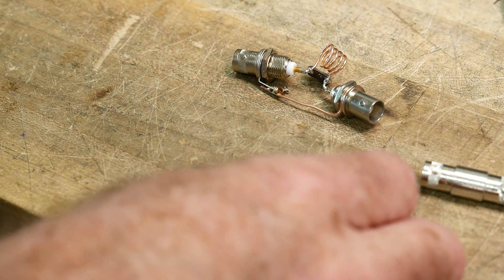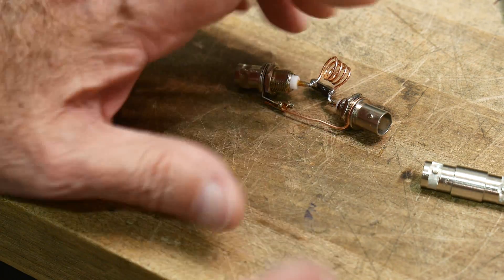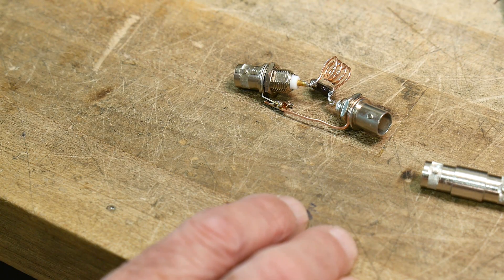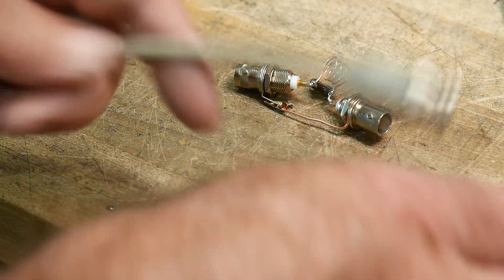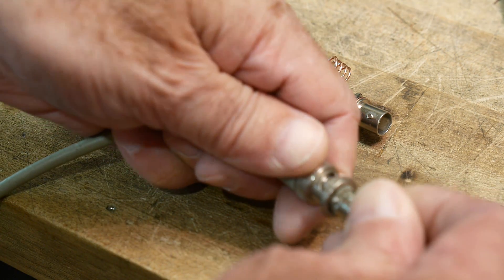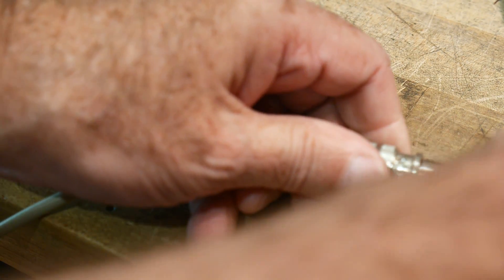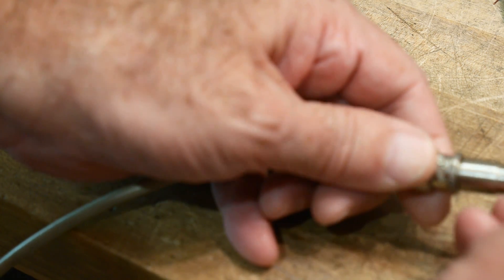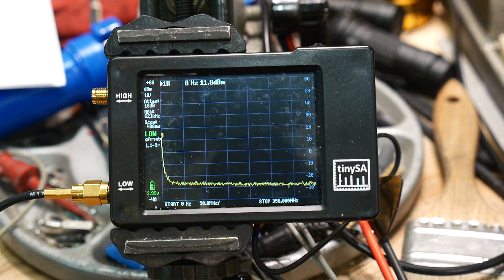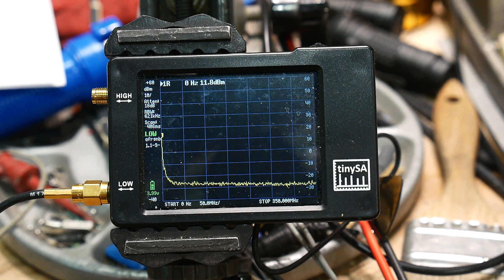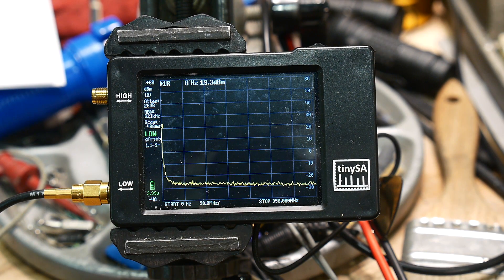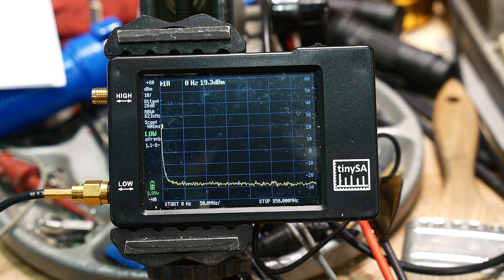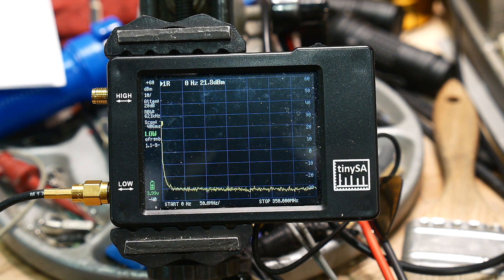All right, so we're going to use the noise source. We need to have some type of tracking generator, but we don't have one so we're going to use a noise source. So first we're going to make sure our noise source works. We're going to put the noise source onto the spectrum analyzer and it's pretty flat. So you could normalize it and be all fancy and everything, but we don't need to have any of that because all we want to know is what frequency does it resonate at.